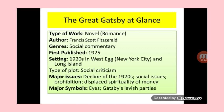The author is Francis Scott Fitzgerald, and it was first published in 1925. The setting of the novel is the 1920s in West Egg, now currently called New York City and Long Island. The type of work is social criticism. The major issues in the novel are the decline of the 1920s, social issues, prohibition, and displaced spirituality of money.